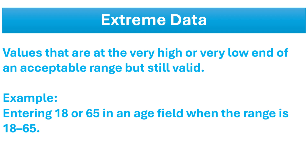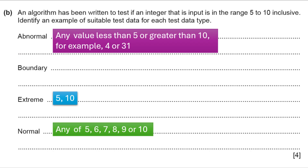Now let's discuss extreme data — values that are at the very high or very low end of an acceptable range but still valid. For example, entering 18 or 65 in an age field when the range is from 18 to 65. For our question, as the range is 5 to 10, so 5 and 10 are the extreme test data.